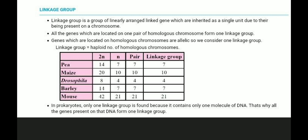Now we need to understand the linkage group. For the pea plant, 2N is 14, so N is 7, and the linkage group is 7. A linkage group is a group of linearly arranged genes which are inherited as a single unit due to their presence on a chromosome. All genes located on one pair of homologous chromosomes form one linkage group.